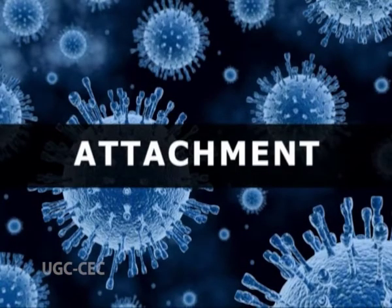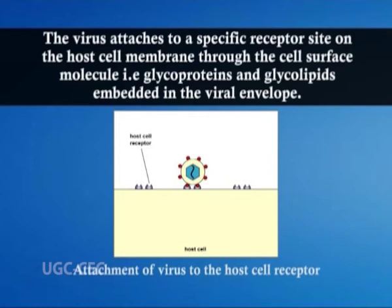First, we'll come to attachment. The virus attaches to a specific receptor site on the host cell membrane through cell surface molecules — that is, glycoproteins and glycolipids which are embedded in the viral envelope. Glycoproteins have a sugar group attached to the protein, and glycolipids have a fat or lipid group attached. These receptors on the host cell enable the virus to gain entry into the host cell.